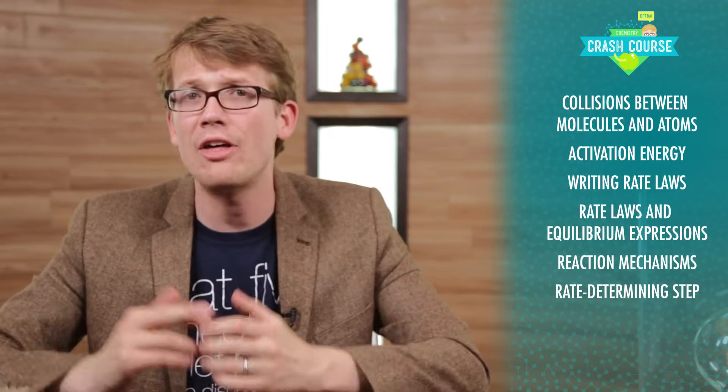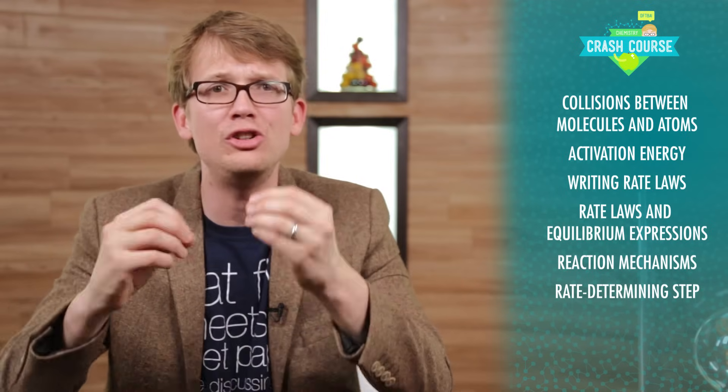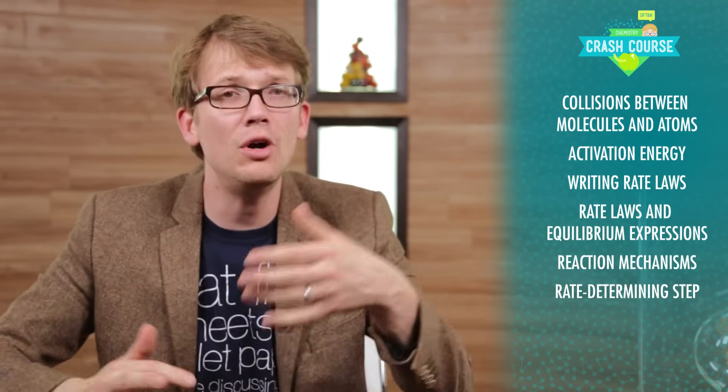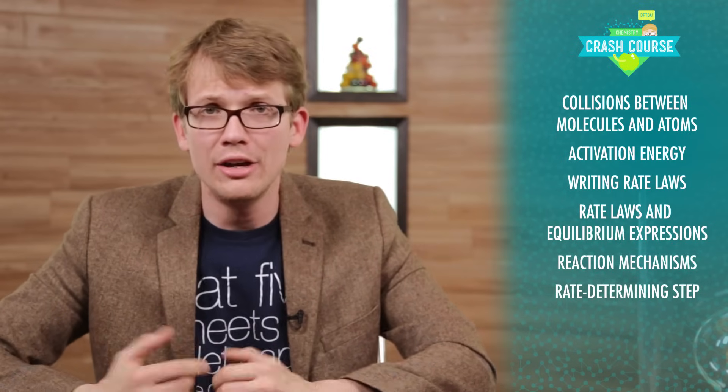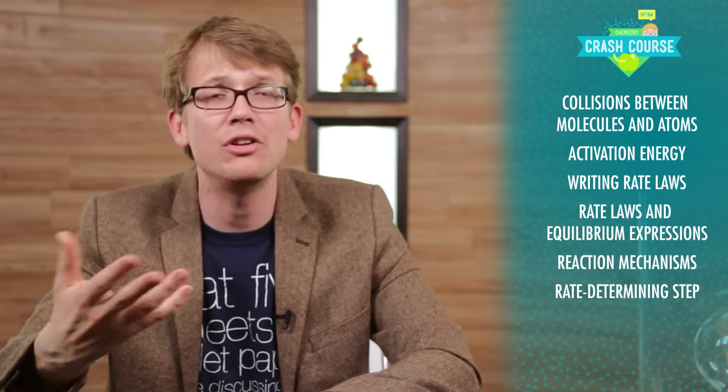Thanks for hanging out for this episode of Crash Course Chemistry. If you paid attention, you learned that chemical reactions depend on collisions between molecules and atoms, that the particles have to be oriented correctly when they collide, and that they have to collide with enough energy to meet the threshold for the reaction known as the activation energy. You also learned how to write rate laws and figure out their exponents, and how to calculate the form or order of a rate law. You learned how rate laws are related to equilibrium expressions. And finally, you learned that chemical reactions actually happen in steps. That the slowest step determines the overall rate of the reaction, and that the reason for that comes right back around the activation energy.